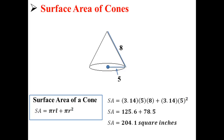So to find the surface area of our cone, it's equal to 3.14 times 5 times 8, plus 3.14 times 5 squared. After simplifying that, we get surface area equals 125.6 plus 78.5, or simply 204.1 square inches.